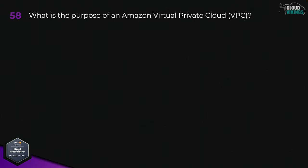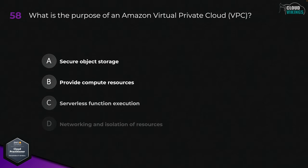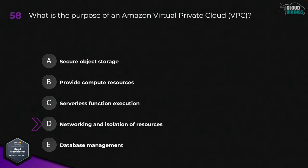Question fifty-eight: what is the purpose of an Amazon Virtual Private Cloud, or VPC? Options are: A, to secure object storage; B, provide compute resources; C, serverless function execution; D, networking and isolation of resources; or E, database management. The correct answer here would be D, networking and isolation of resources.